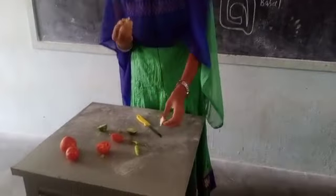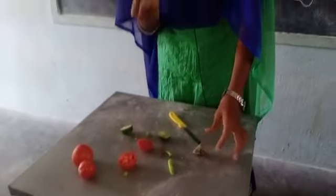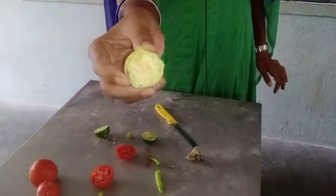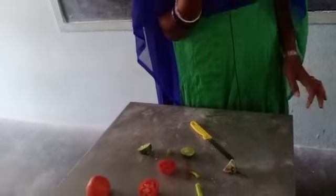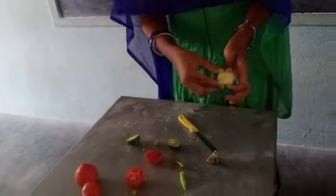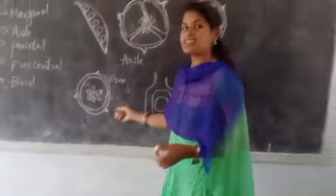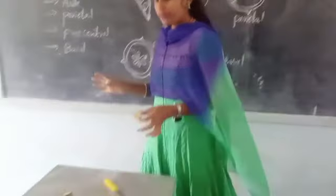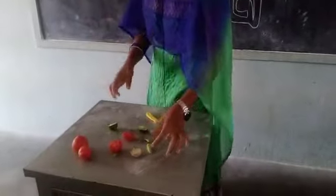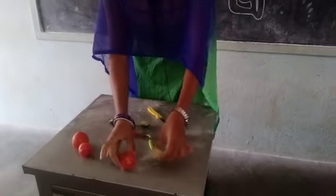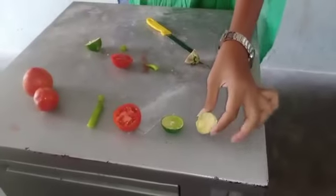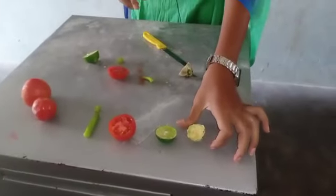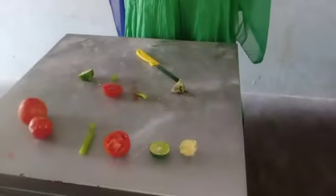You can see here there are no branches — the chambers are not divided — and the seeds are scattered throughout the fruit. So this we can take as an example for free central placentation. So these are all the examples we have seen: tomato, lemon, chili, and brinjal — all examples of the different types of placentation.